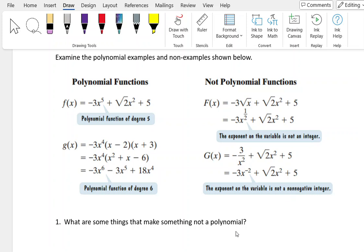The first question asks, what are some things that make something not a polynomial? When we look at the not polynomial functions category, we see the first thing is that the exponent on the variable is not an integer.